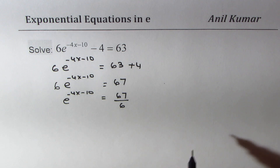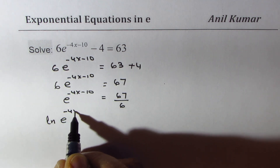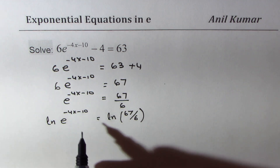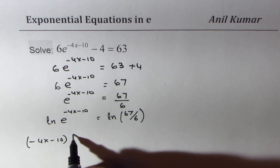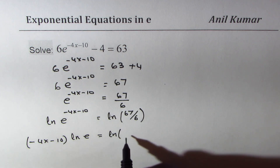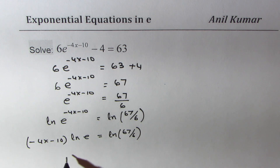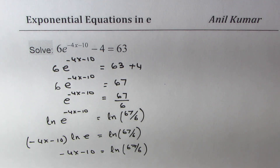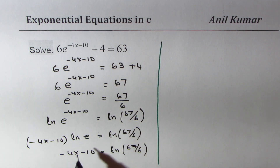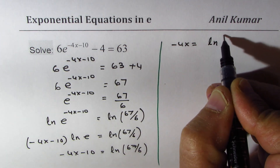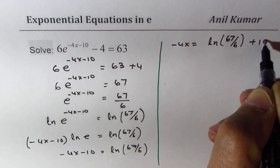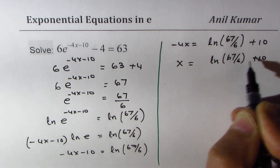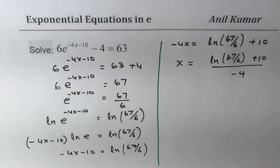Now we take natural log on both sides: ln(e^(-4x-10)) equals ln(67/6). That gives (-4x minus 10) times ln(e) equals ln(67/6). Since ln(e) is 1, we have minus 4x minus 10 equals ln(67/6). Taking 10 to the right side: minus 4x equals ln(67/6) plus 10. Dividing by minus 4: x equals (ln(67/6) plus 10) divided by minus 4.